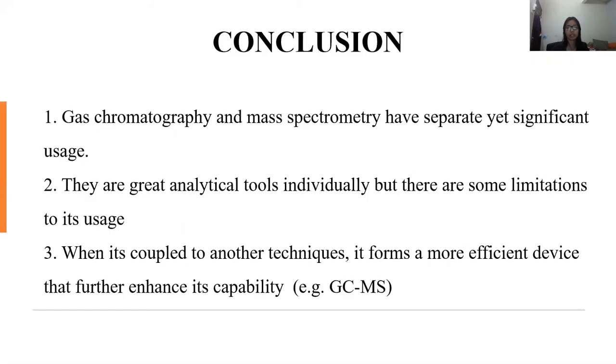In conclusion, gas chromatography and mass spectrometry are actually powerful, both great analytical tools in the world of science. They have separate usage. And although individually they are great analytical tools, there are limitations to its usage. That's why scientists and chemists find ways to couple one technique to another to form a more efficient device to enhance the capability of the method. This process is called the hyphenated method. For example, GC-MS.